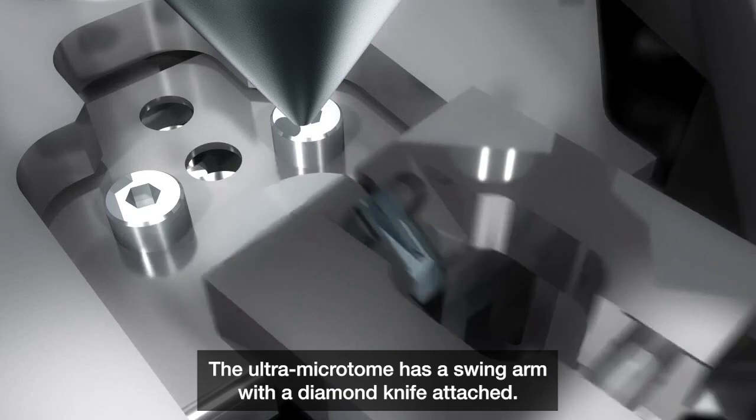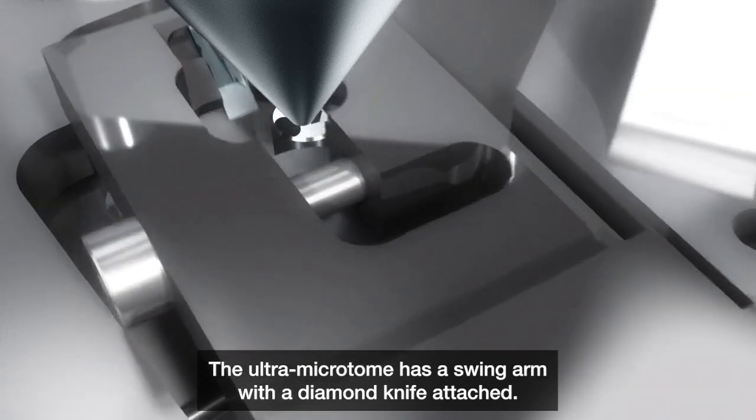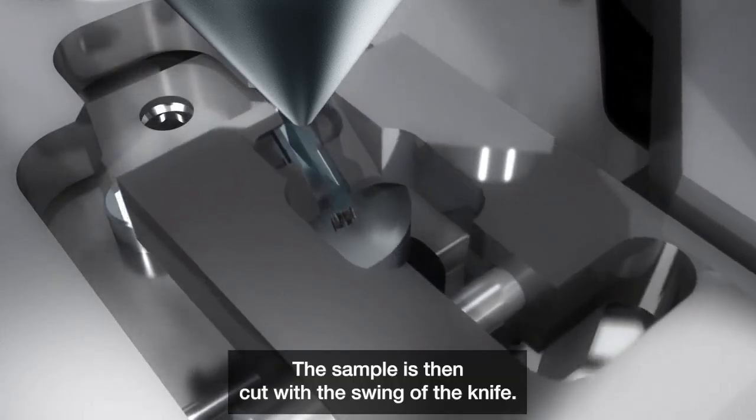The Ultra Microtome has a swing arm with a diamond knife attached. The sample is then cut with the swing of the knife.